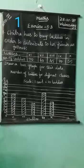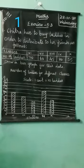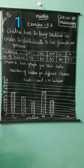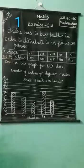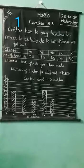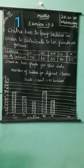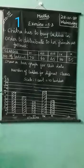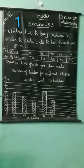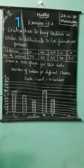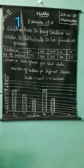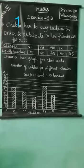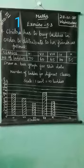First, 6th standard. How many laddoos are distributed? 70 laddoos. 70 is here on the scale, so we draw a bar up to 70. Measure 70 and draw the bar graph.